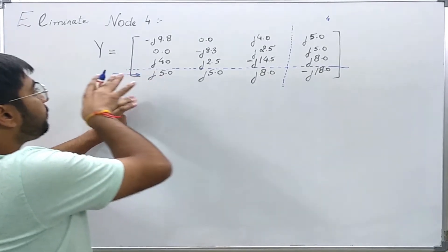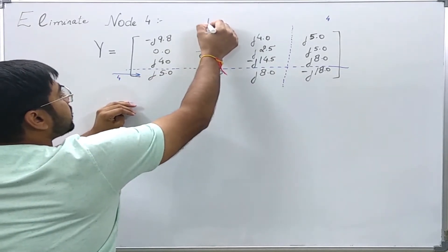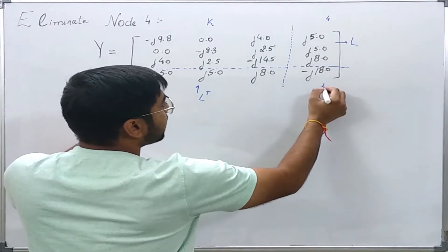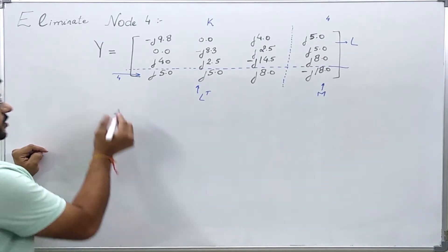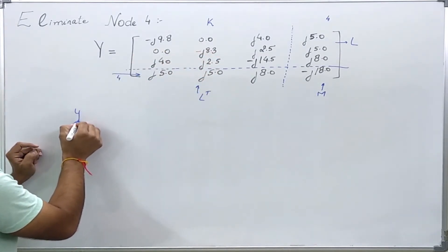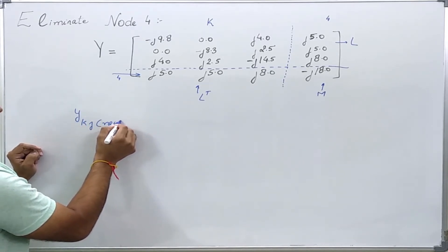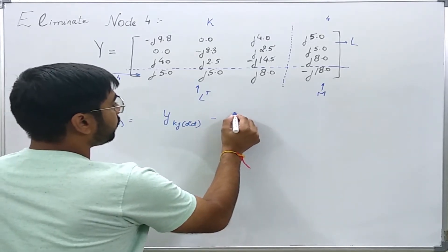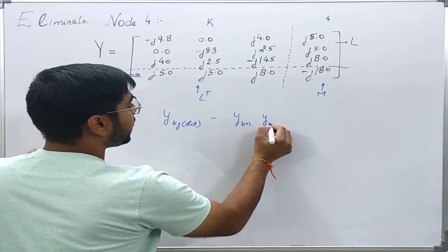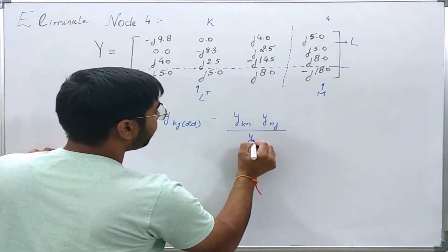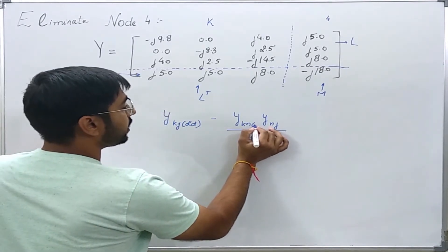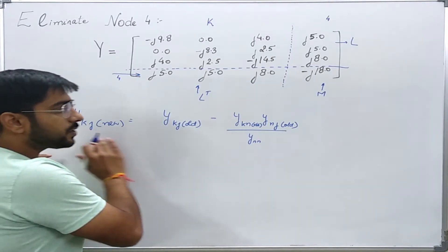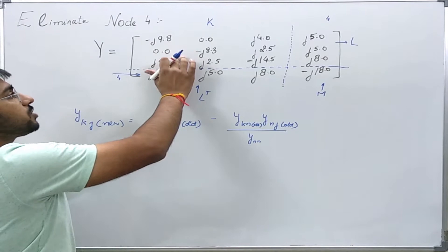We knew that if I partition the matrix in such a way that this matrix is K, this matrix is L, and this matrix is L transpose and this is M, then the elements of new matrix K can be given by YKJnew is equal to YKJold minus YKNYNJ divided by YNN. These are the old ones. Using this formula repeatedly I can get the elements of new K matrix.